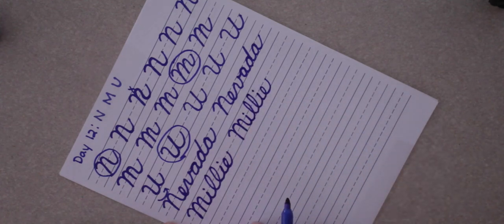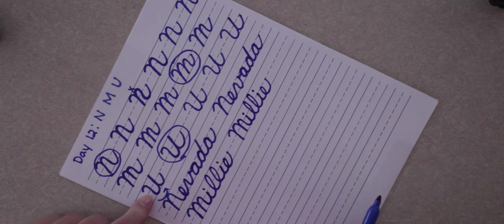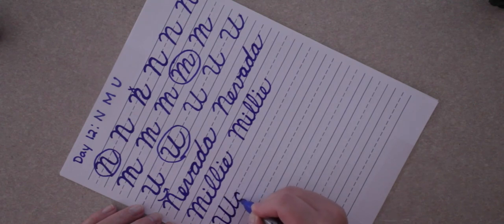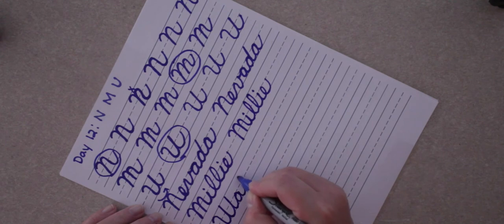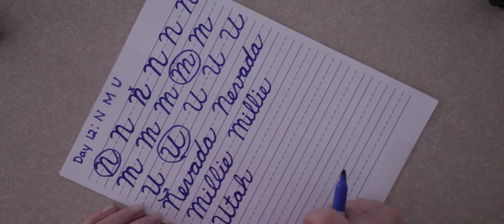When you're ready, you can pause the video and practice writing Millie. With our capital U we're going to write another state name, the state of Utah. So we're going to make a capital U. That's going to go right into our T, and then our A, and then our H. Then we pick up our pencil and cross our T. Utah.